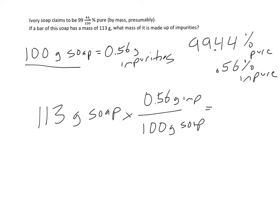So 113 times 0.56 divided by 100, and I get that there are 0.633, technically I should probably round this to 0.63 if we're doing sig figs, 0.63 grams of impurities. And that was sort of the approach.